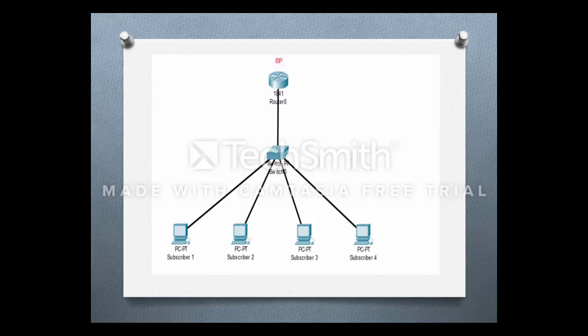Consider an example where we have an ISP and it has four subscribers. The ISP is providing internet to all four subscribers, and we can decide the speed limit for all these four PCs.